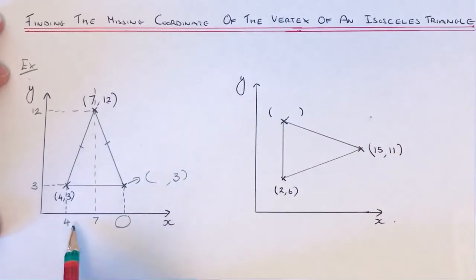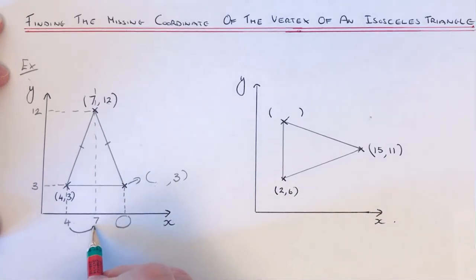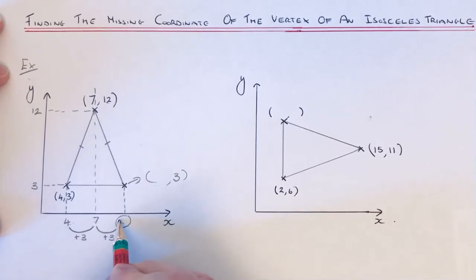To do it, we can look at the numbers along the x-axis. If you look at the difference between four and seven, it's three. Seven take away four is three. So if we add three on to the seven, that will give us this coordinate here. Seven and three is ten, so the x coordinate is ten.